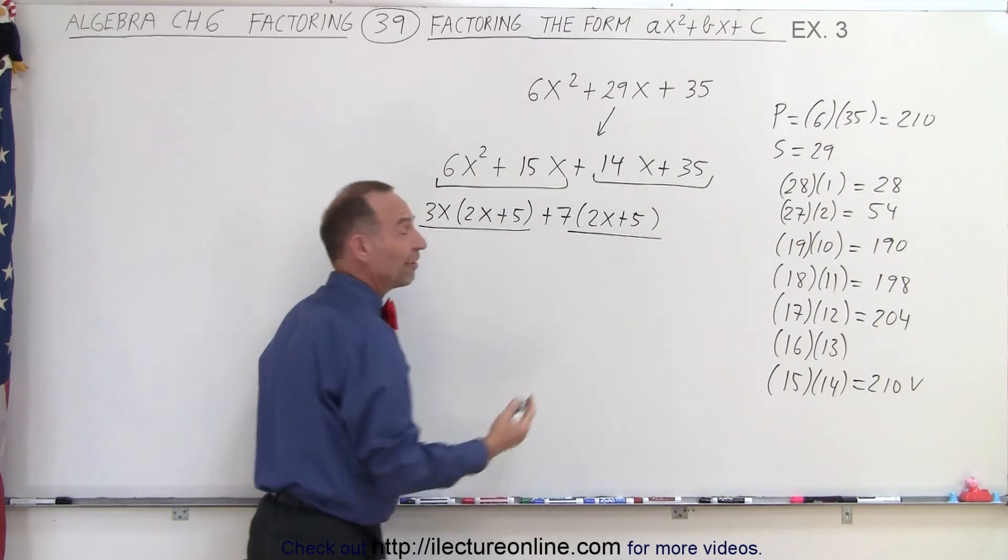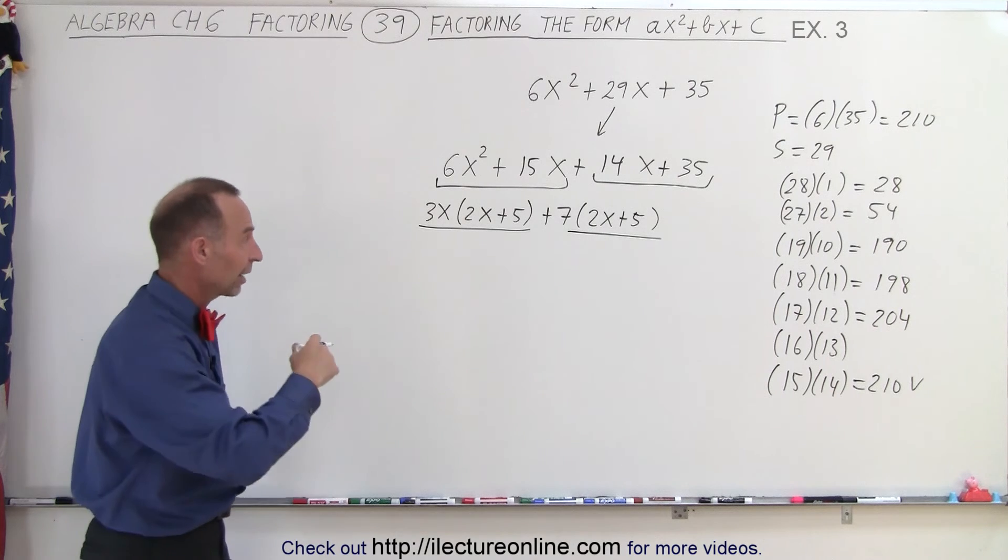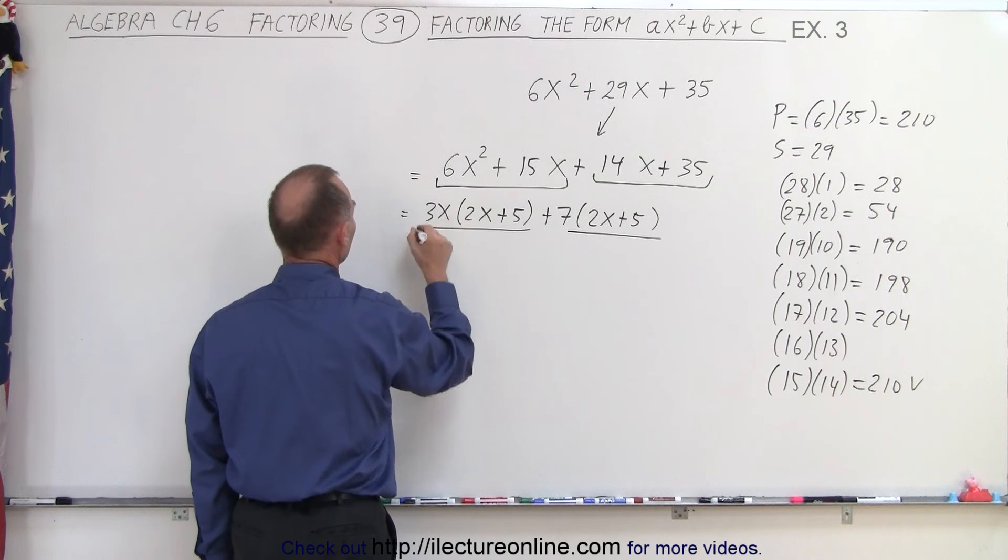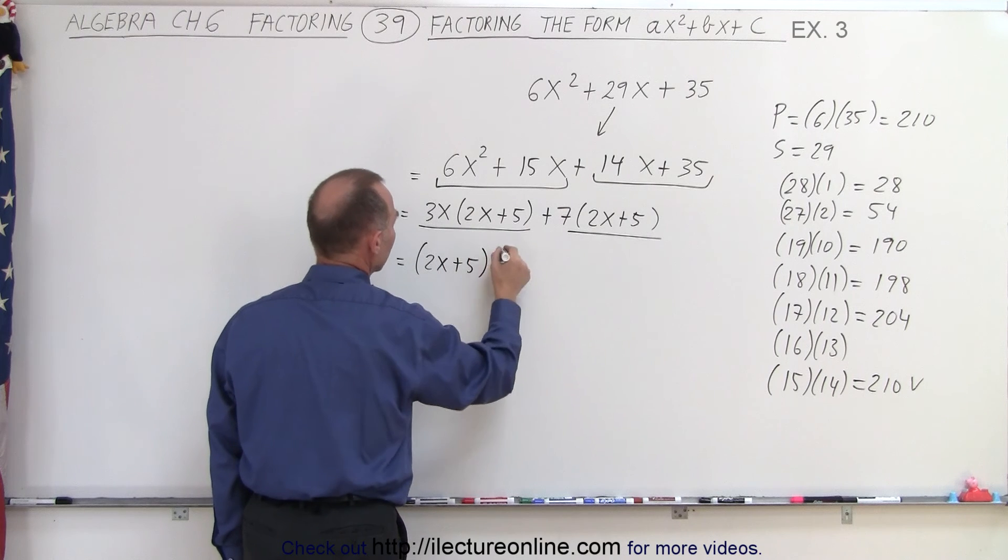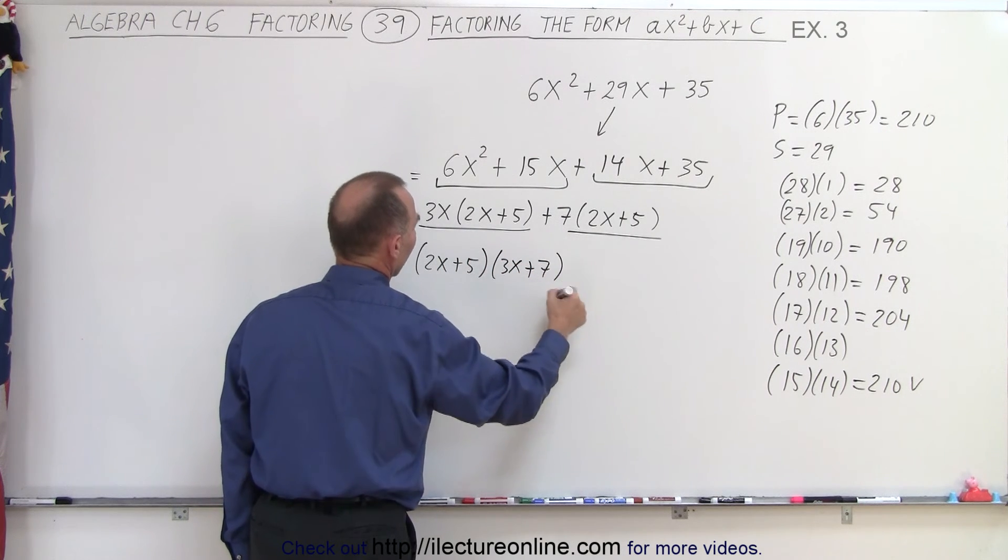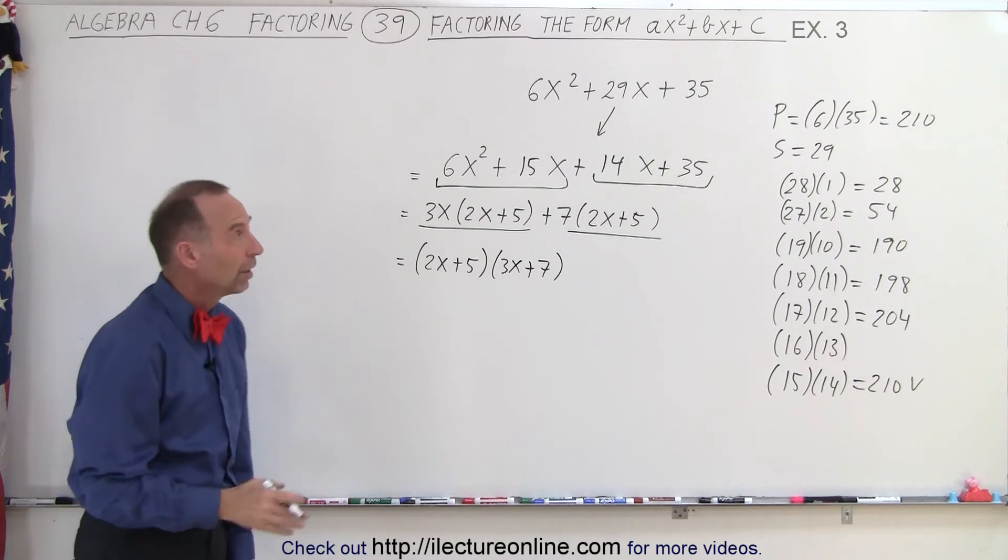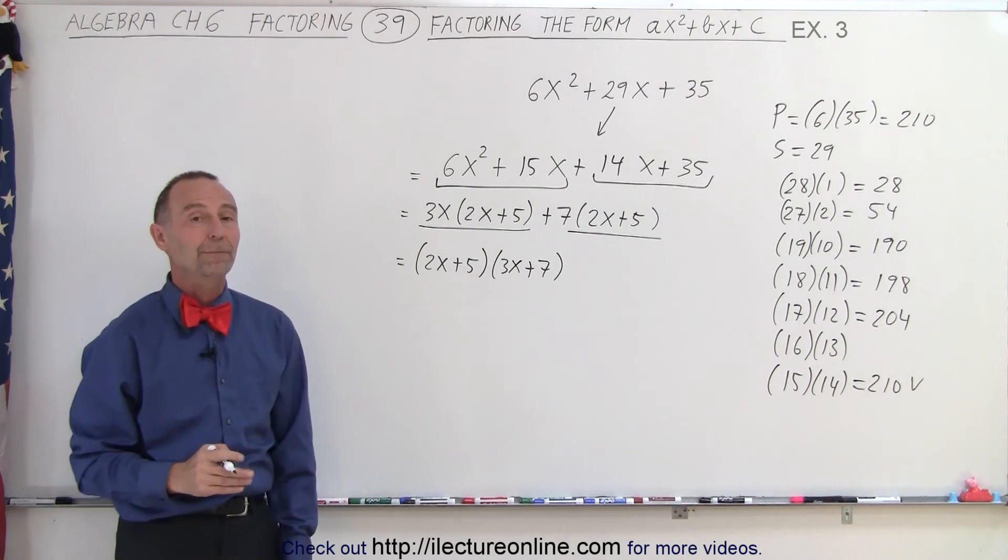here and here, the common factor is 2X plus 5. I can factor that out, which means I can write this as 2X plus 5 times 3X plus 7. That is the factored form of our original problem.